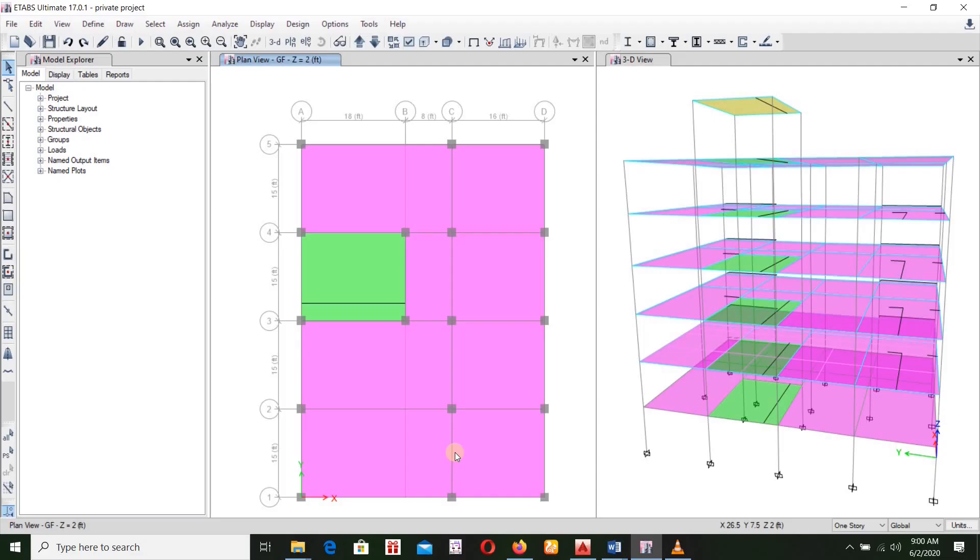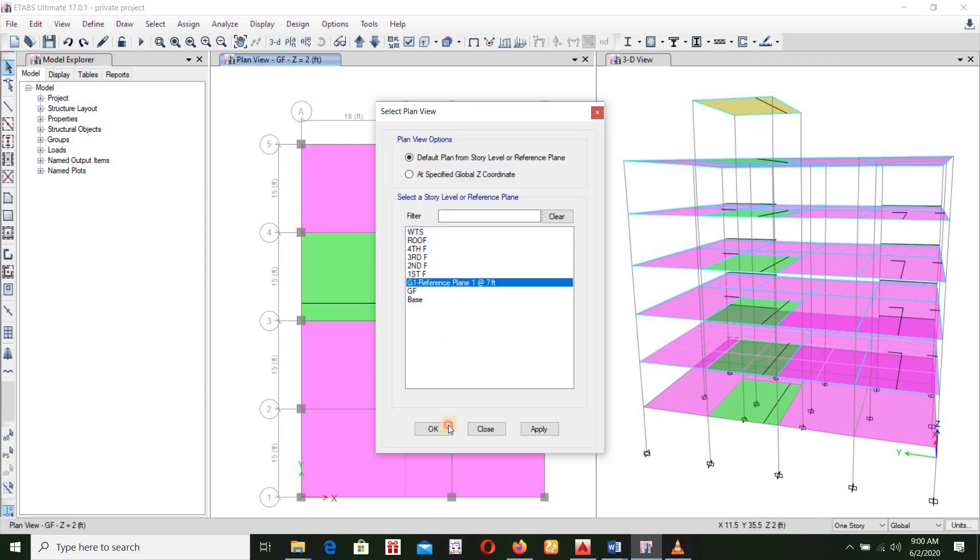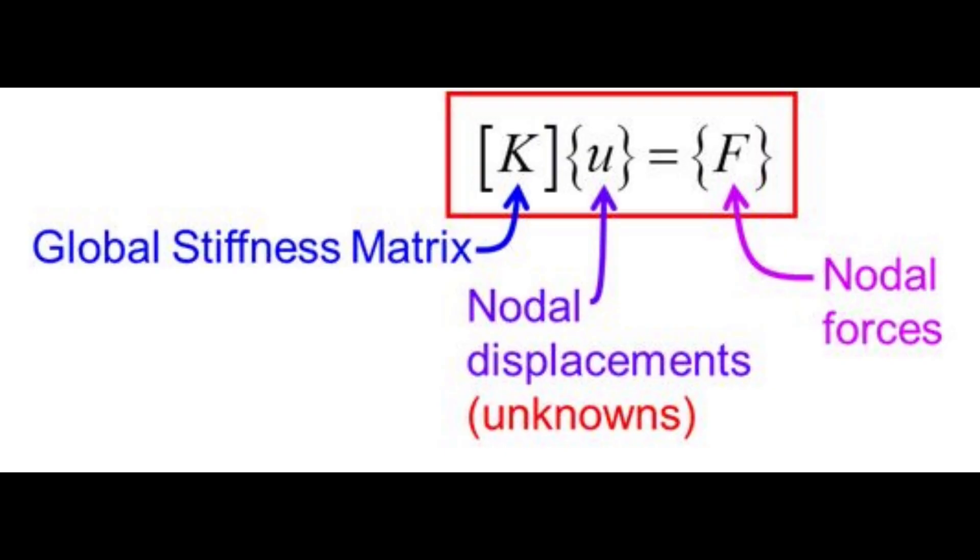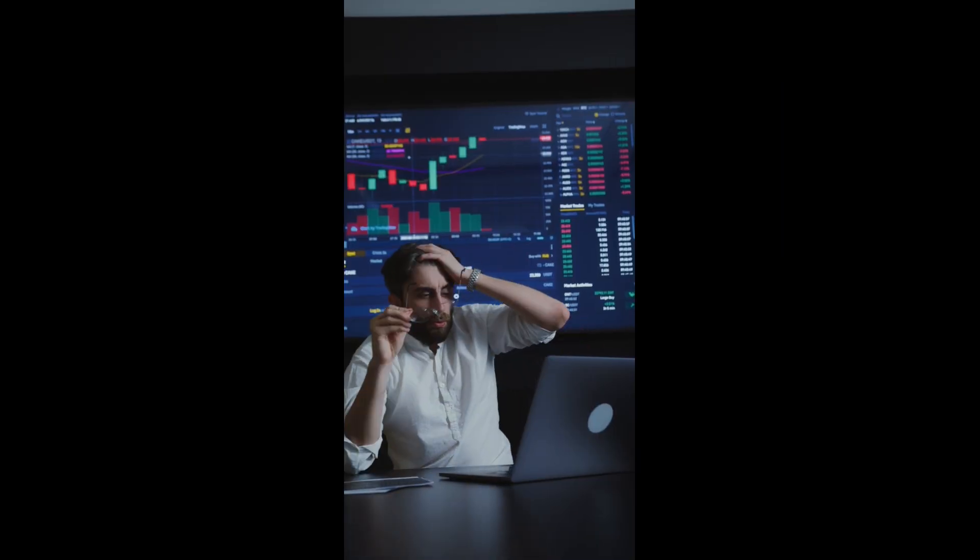Most structural analysis today is done using software with the aid of computers. Computer-based analysis is dominated by matrix methods, namely the direct stiffness method.